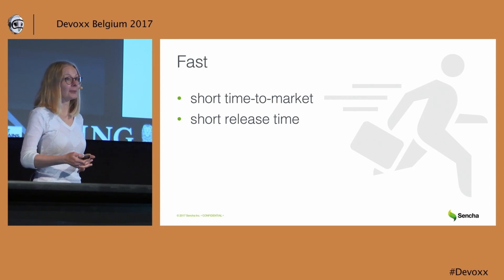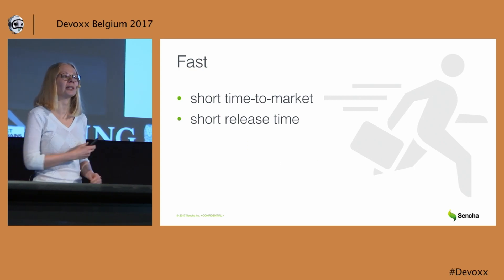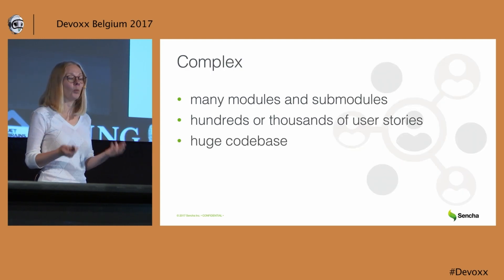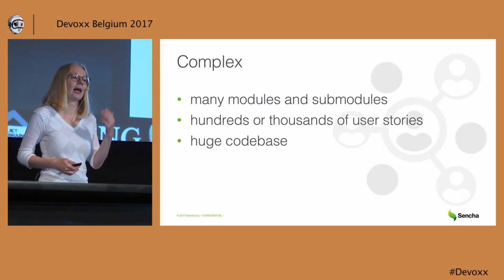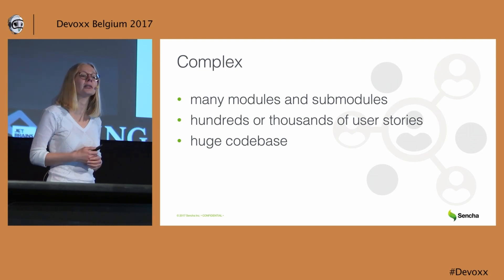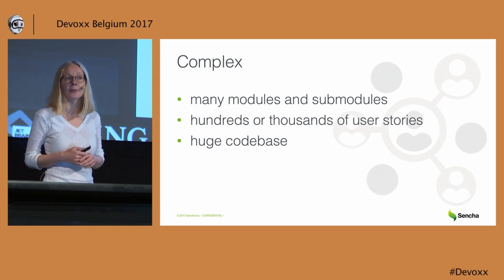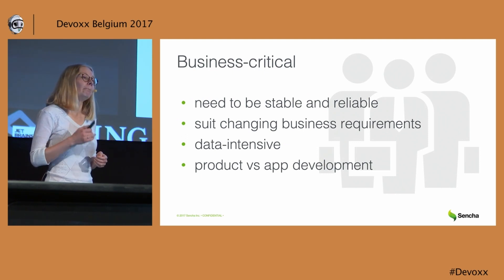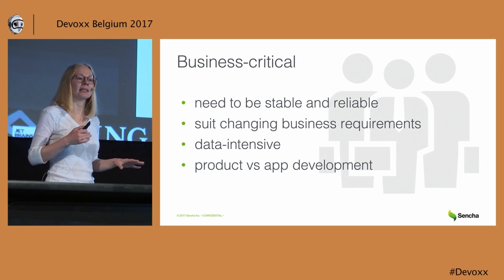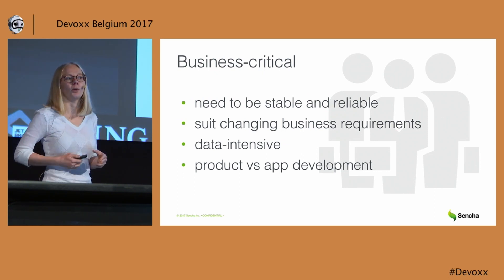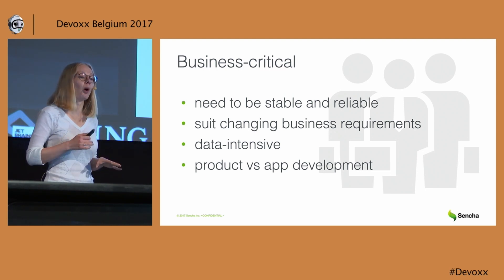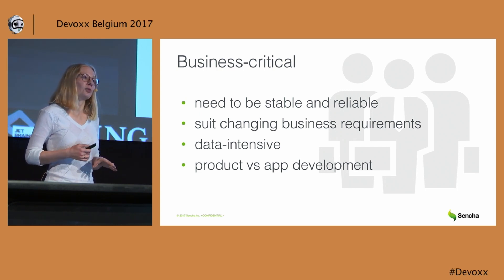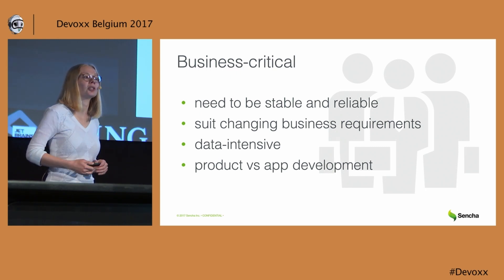What does fast mean? Fast means that to be competitive, enterprises have to shorten time to market as well as release time for every new version of an application. What does complex mean? An application is complex when it needs to be stable and reliable, work 24 hours a day, 7 days a week, and suit all changing business requirements. Business-critical enterprise applications have to handle huge data sets.